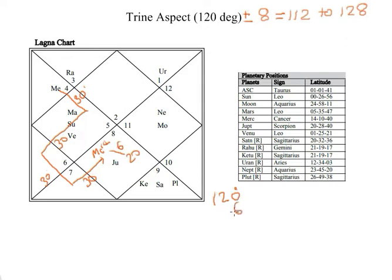So the distance between Mercury at 14 degrees Cancer and Jupiter at 20 degrees Scorpio is 126 degrees. Since this comes within the range of 112 to 128 degrees, we can say Mercury is in trine aspect with Jupiter.